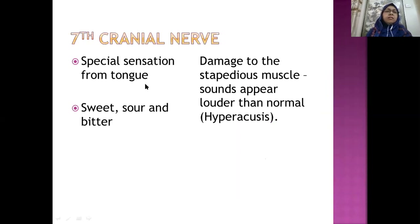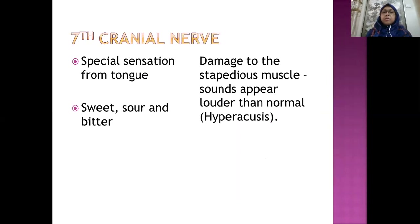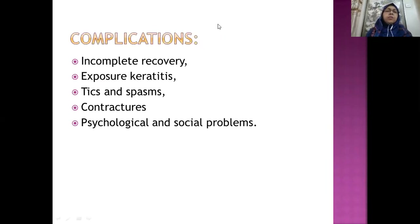For special sensation of the tongue, test for sweet, sour, and bitter by keeping sugar, salt, or bitter substances with you — for the anterior two-thirds of the tongue. Damage to the stapedius muscle causes sound to appear louder than normal — this is called hyperacusis. Complications of Bell's palsy or lower motor neuron seventh cranial nerve lesion include: incomplete recovery, exposure keratitis, tics and spasm, contracture, and psychological and social problems.